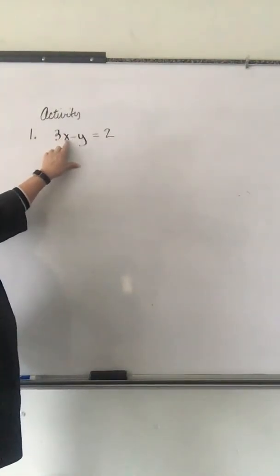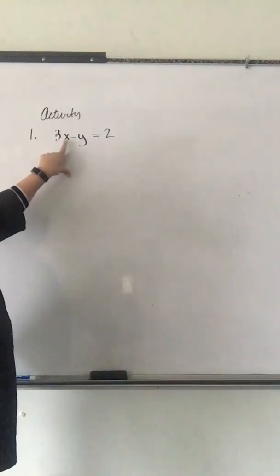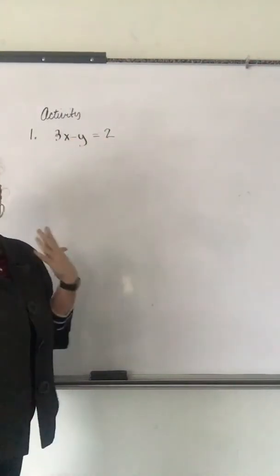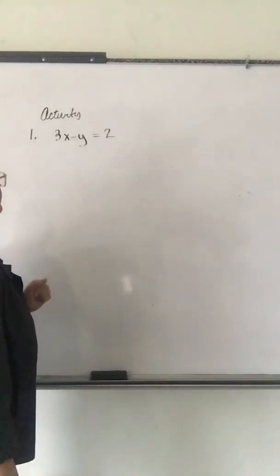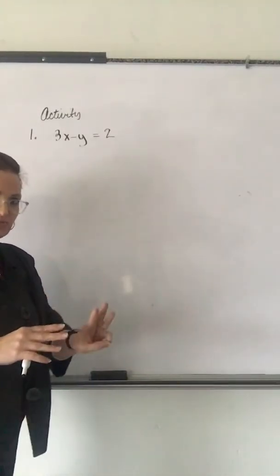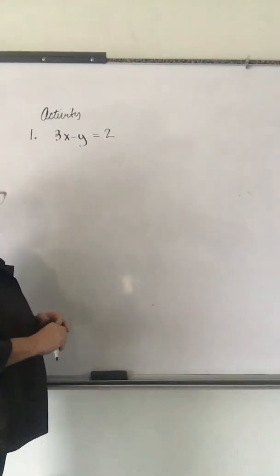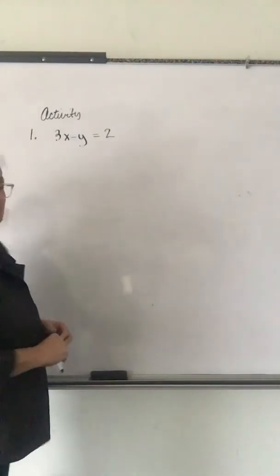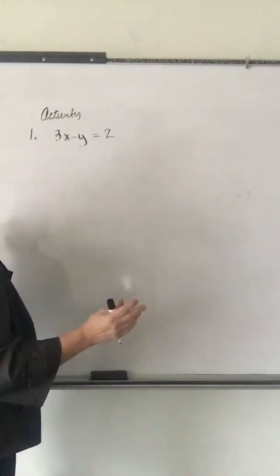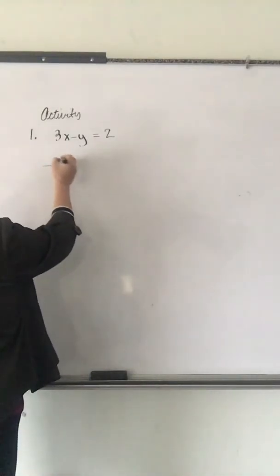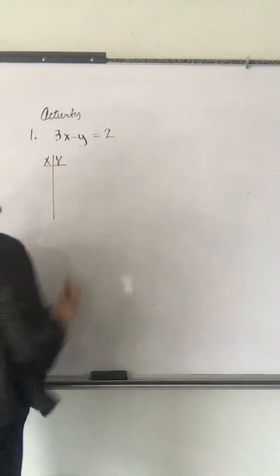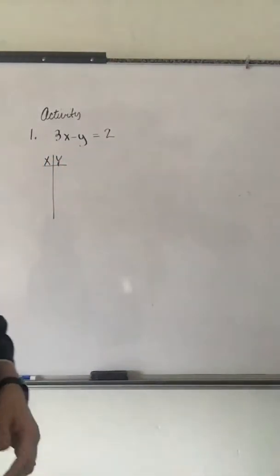We're looking for numbers that you put in for X, times it by 3, subtract a Y value, and it equals 2. Now, some of y'all are better at doing this math in your head, and you might just think about that and come up with, you just need to come up with 2, really. I recommend 3 to just check yourself, but really, it only takes 2 good points to connect and make a line. For me, it's easier just to do the math, to do the algebra trick of solving equations, so I would recommend this.